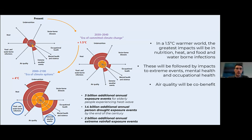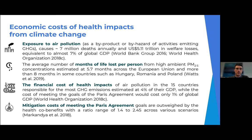According to the IPCC Fifth Report, these impacts will get stronger in the future. With 1.5°C warming, we see increased impacts on nutrition, heat, and food and waterborne infections. There are already important costs today: exposure to air pollution alone represents about 7% of global GDP — approximately $5.11 trillion. Looking at 15 countries specifically, air pollution ranges around 4% of GDP. Crucially, the benefit-to-cost ratio of interventions to reduce these impacts is positive — we get more in return than we invest.